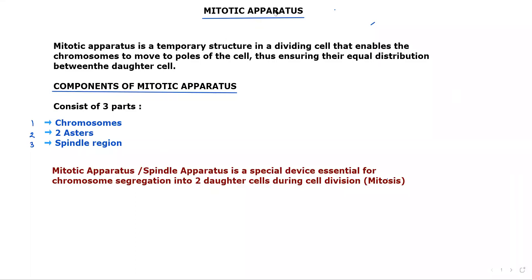Let's discuss the mitotic apparatus. The mitotic apparatus is a temporary structure in a dividing cell that enables chromosomes to move to the poles of the cell, ensuring their equal distribution between daughter cells. It consists of three parts: chromosomes, two asters, and the spindle region. The mitotic apparatus is also called the spindle apparatus, and is essential for chromosome segregation into two daughter cells during cell division.